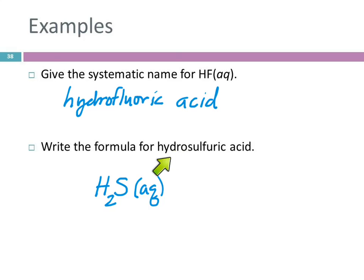The prefix hydro is our big clue that this is a binary acid. We'll talk about ternary acids next, and they do not use the prefix hydro. The word acid is always the second word in the name — it's always going to say acid. There aren't tons of binary acids, so there aren't tons of examples to work through.